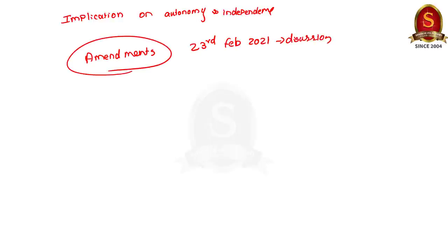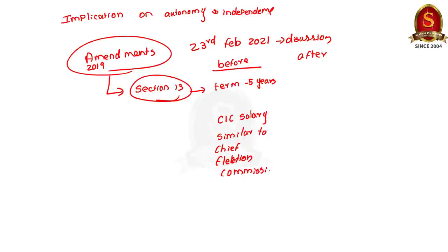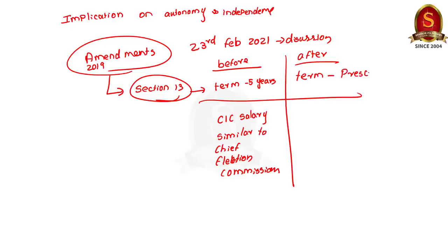Let us see the changes made by the 2019 amendment. First, it amended Section 13 of the Right to Information Act. Before the amendment, Section 13 stated the term of the Central Chief Information Commissioner and Information Commissioners at 5 years or until the age of 65, whichever is earlier. Their salaries and allowances were the same as that of the Chief Election Commissioner and Election Commissioners respectively. The amended Act now says that the term and salaries of the Central Chief Information Commissioner and Information Commissioners may be prescribed by the Central Government.